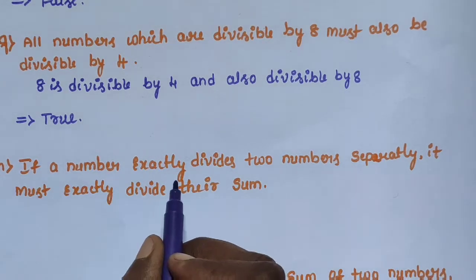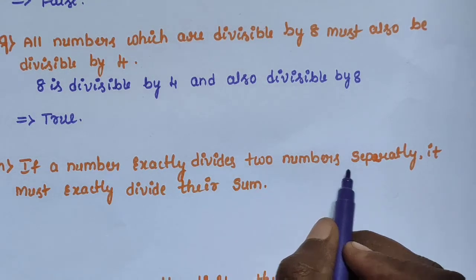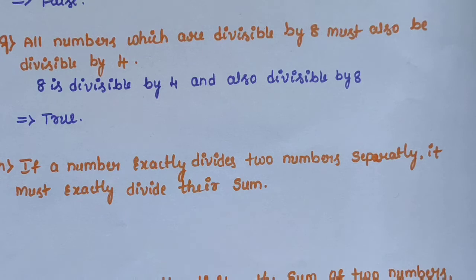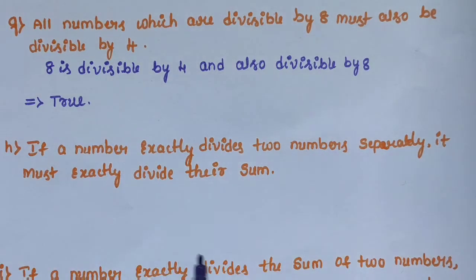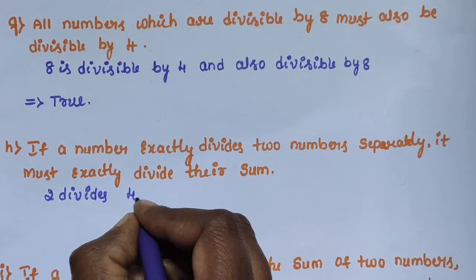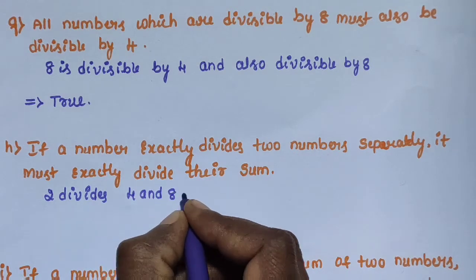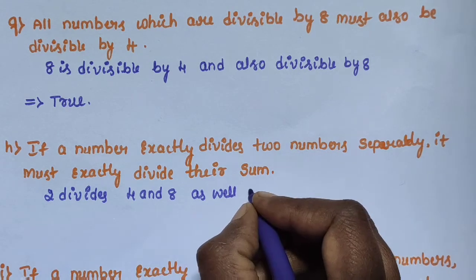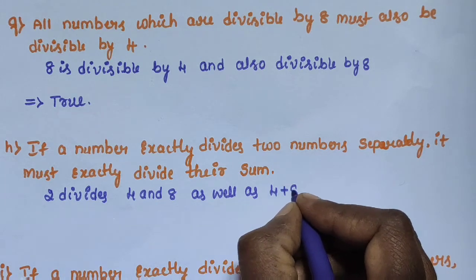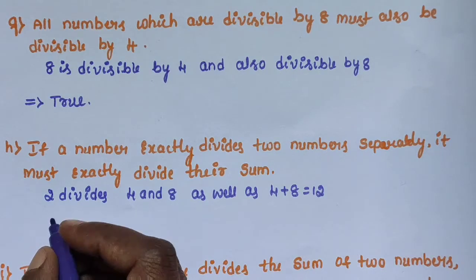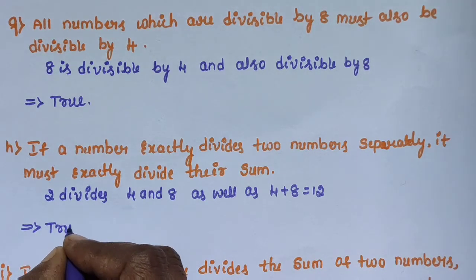Sub-question H: if a number exactly divides two numbers separately, it must exactly divide their sum. This statement is true, because 2 divides 4 and 8, and 4 + 8 = 12, which is also divisible by 2.